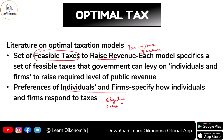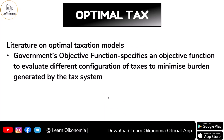Some people try to evade taxes, even though tax evasion is identified as an offense. Whenever we build models related to optimal tax, we have to consider these two categories of people. Again, when it comes to optimal taxation, the literature identifies another important aspect known as the objective function of the government. The government wants to increase its revenue — that is the objective function.